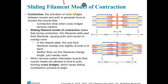In a relaxed state, the thin filaments and thick filaments slightly overlap. Then during contraction, cross-bridges form between the actin and the myosin, and the myosin actually pulls the actin past it, sliding past. That's going to overall shorten the length of the sarcomere.